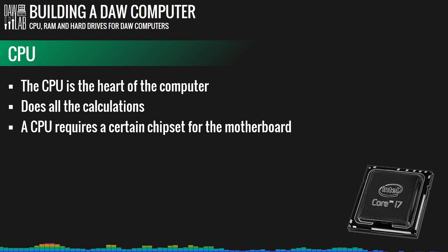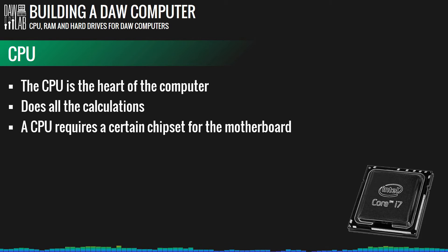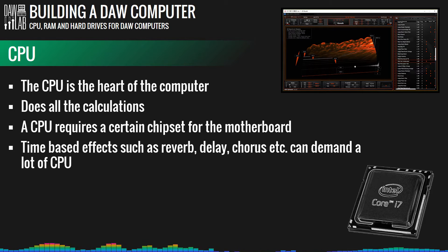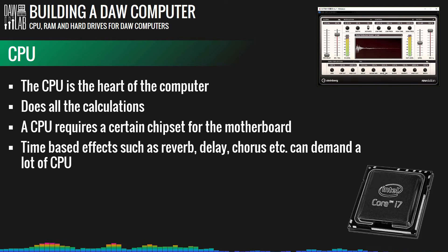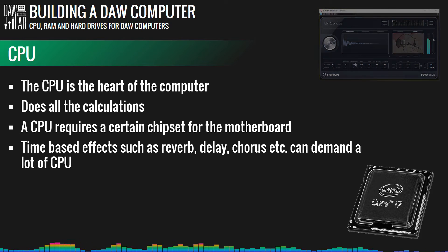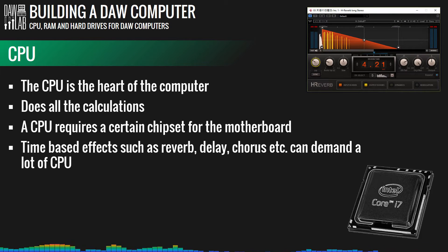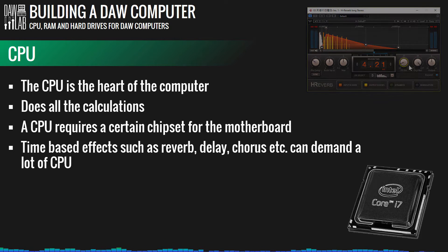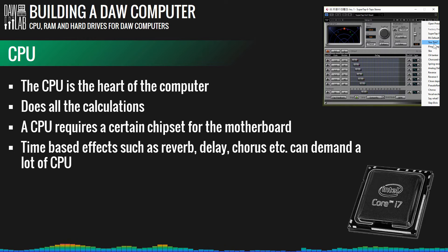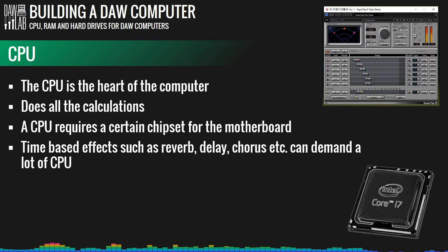Time-based effects such as reverb, delay, panning, phaser, and chorus require a lot of CPU because their output requires a lot of calculations. Reverb, for example, is basically a signal duplicated multiple times, altered in pitch, amplitude, and pan across the stereo field in real time — this is very heavy on the CPU and is probably the single effect that demands the most CPU in a DAW. Delay and other time-based effects also require significant CPU power, so if you use many of these simultaneously you'll want a high-end CPU.